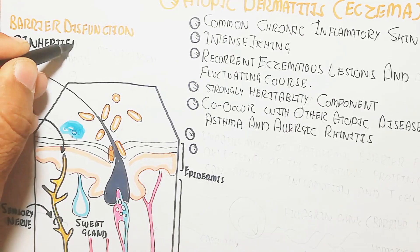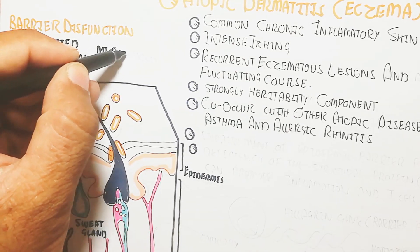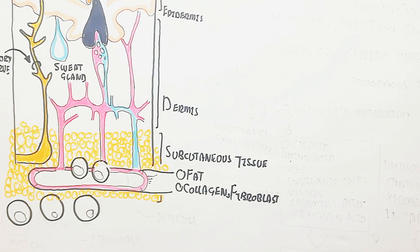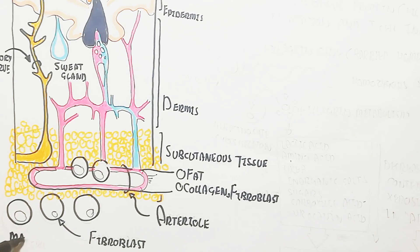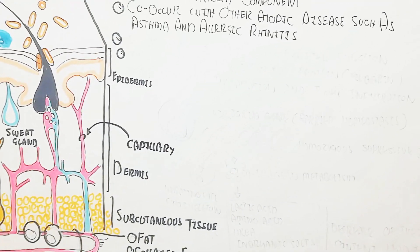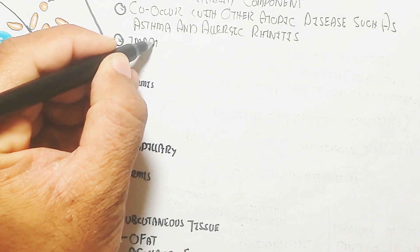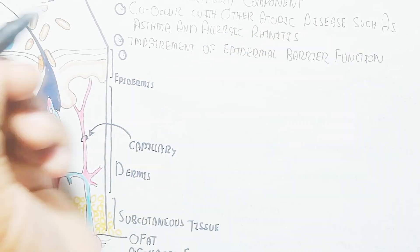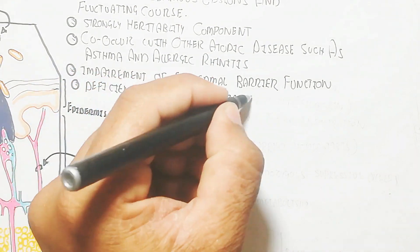The epidermis acts as a barrier immunity, not allowing bacterial invasion. Inherited and environmental factors disturb this barrier immunity, causing barrier dysfunction. When this occurs, pathogenic microbiome can invade. The dermis contains mast cells, fibroblasts, and arteries containing innate immune cells. Impairment of epidermal barrier function leads to deficiency of the structural protein filaggrin.